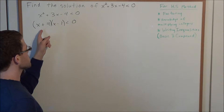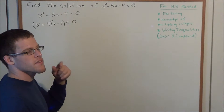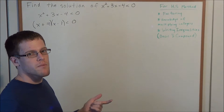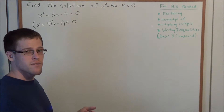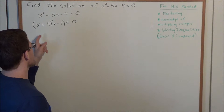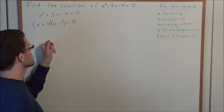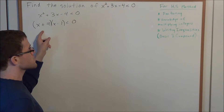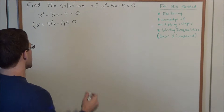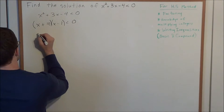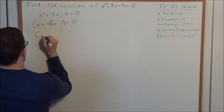So now we look at this and we have the product of two numbers is less than zero. If we're multiplying two numbers and they're less than zero, that means the product is negative. So one of them has to be positive and one of them has to be negative. This brings us to two cases.